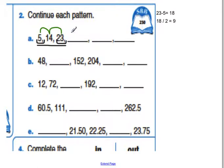23 plus 9, 32. 32 plus 9, 41. 41 plus 9, 50. And that's how I can figure out any of these types of problems.